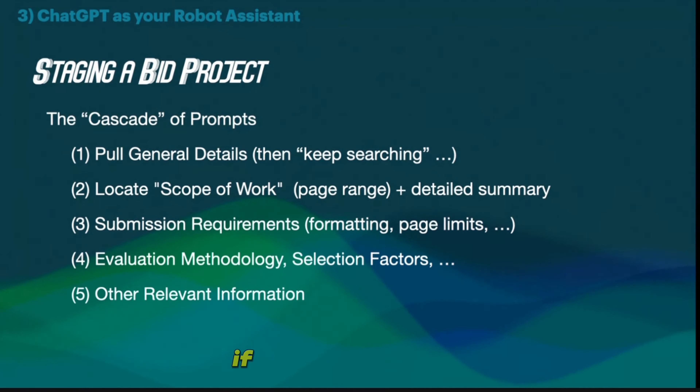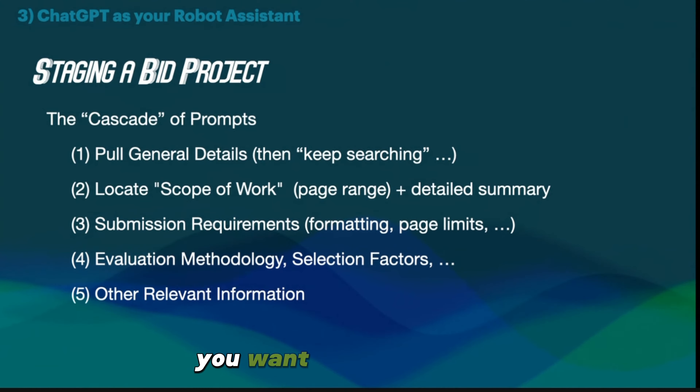Evaluation methodology, selection factors — always want to know what the KO, the contracting officer on the buying side, is looking at. Are they looking for best price? The most robust solution? Sometimes that data's in the RFQ. Then just generally ask ChatGPT: is there any other relevant information you think I should know? You can ask 'anything else' multiple times — it's a robot, you can be like a four-year-old kid and just keep asking.